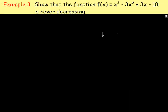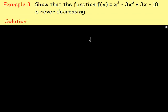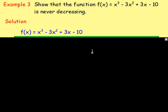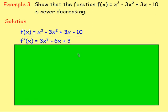Example number 3. Show that the function f(x) equals x cubed minus 3x squared plus 3x minus 10 is never decreasing. If it's never decreasing, the derivative must always be positive, or at least zero — never negative. Differentiating gives f'(x) equals 3x squared minus 6x plus 3. To show that's always positive or zero, we can factorize: take out 3 as a common factor to get 3 times (x squared minus 2x plus 1).